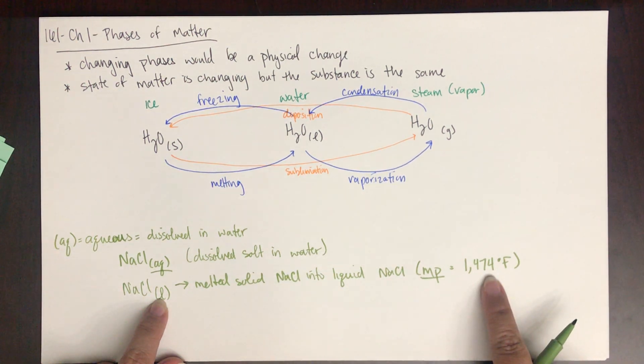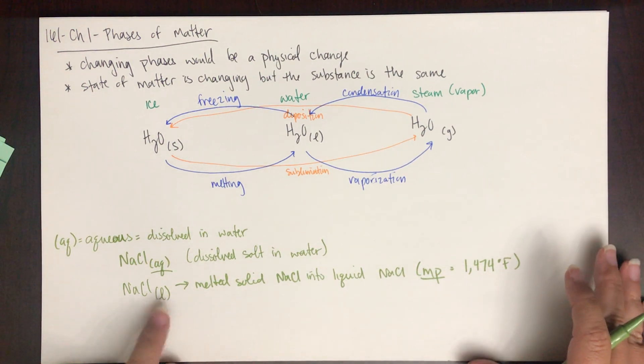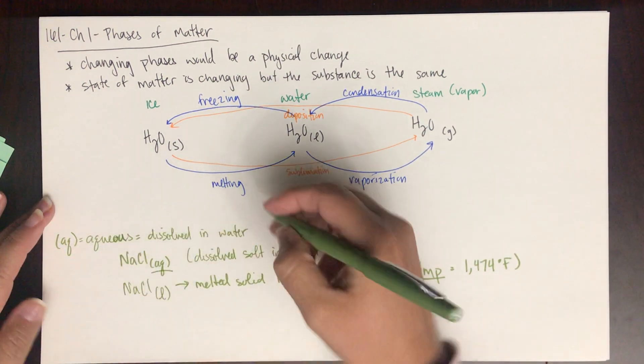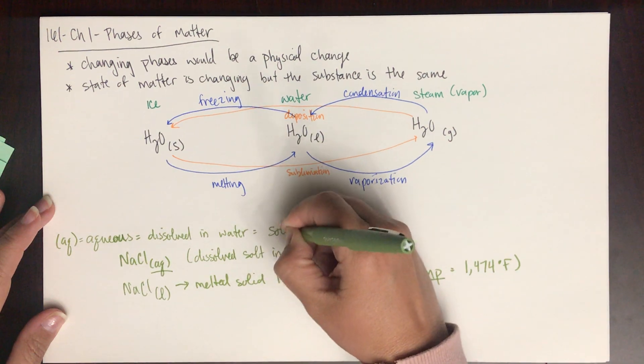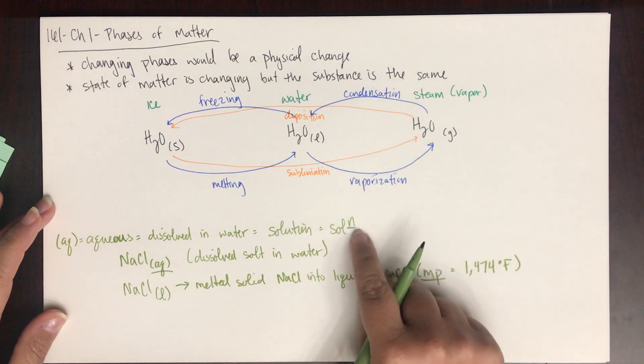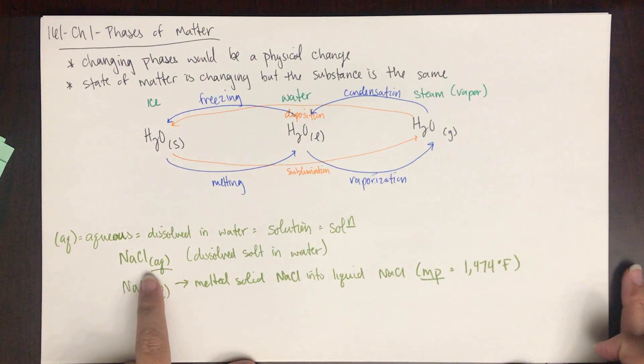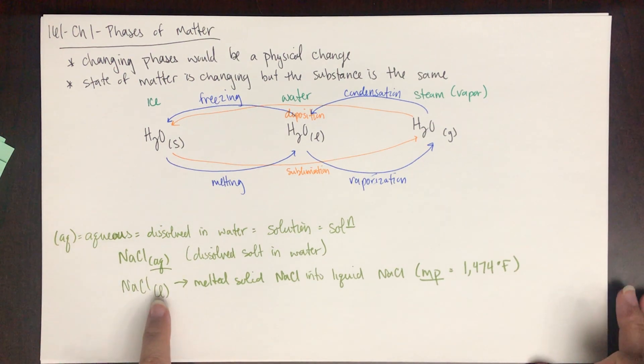If you dissolve salt in water, you have aqueous NaCl. If you're writing a chemical equation and you put NaCl liquid, that means NaCl is above its melting point of 1474 degrees Fahrenheit, which is not what you mean. Almost all the liquids we use will be in solution.